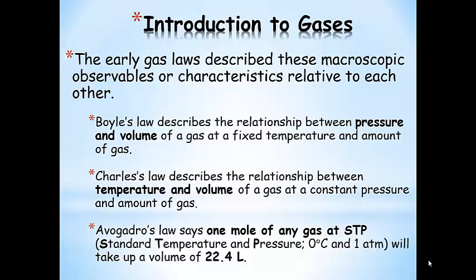Early gas laws described these macroscopic observables relative to each other. We're going to talk about three of them. Boyle's Law describes the relationship between pressure and volume, assuming temperature and amount of gas are fixed. Charles' Law describes the relationship between temperature and volume, assuming pressure and moles are constant. And Avogadro's Law states that one mole of any gas under standard temperature and pressure will take up a volume of 22.4 liters.